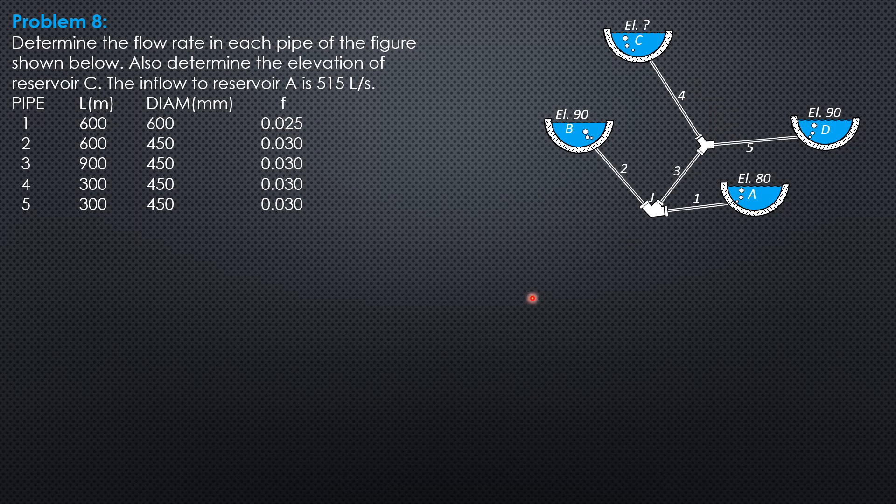First, HF1 equals 0.0826, friction factor 0.025, length 600, 0.515 squared over diameter 0.6 to the 5th. So the head loss is 4.226.